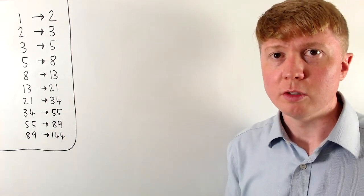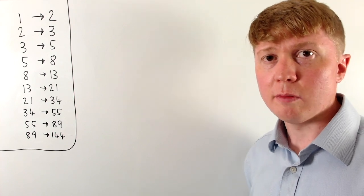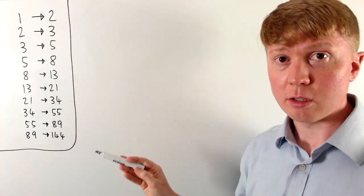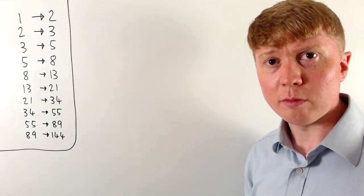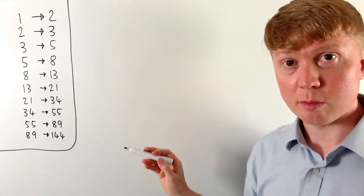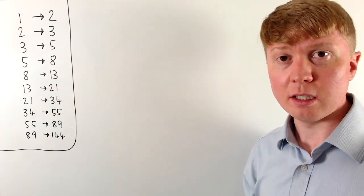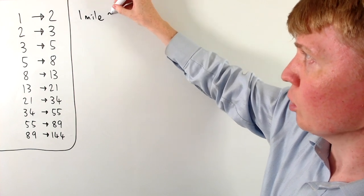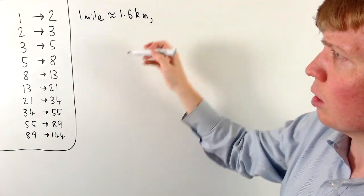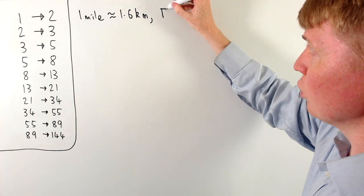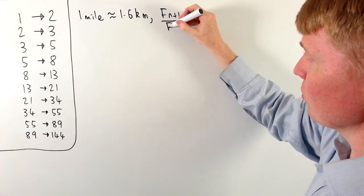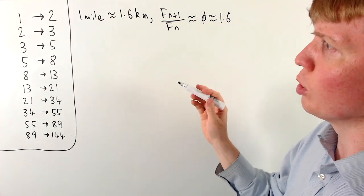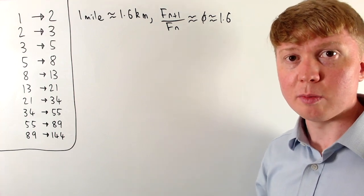Now we'll finish with a neat application of the Fibonacci numbers. We can actually use them to get an approximate conversion between miles and kilometers — going from one Fibonacci number to the next goes from miles to kilometers. So one mile is approximately two kilometers, five miles is approximately eight kilometers, eight miles is approximately 13 kilometers, and so on. The approximation gets better further into the sequence. What's happening is that one mile is approximately 1.6 kilometers, and the ratio between successive Fibonacci terms is also approximately 1.6 — in fact, approximately the golden ratio.